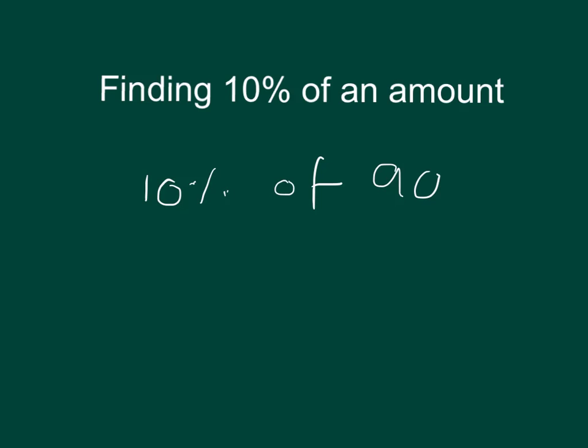To find 10% of 90, we need to know that 10% equals 1 tenth, and 1 tenth can be found by dividing by 10. So you can find 1 tenth of anything by dividing by 10. So 10% of 90 is 90 divided by 10, and the answer is 9.